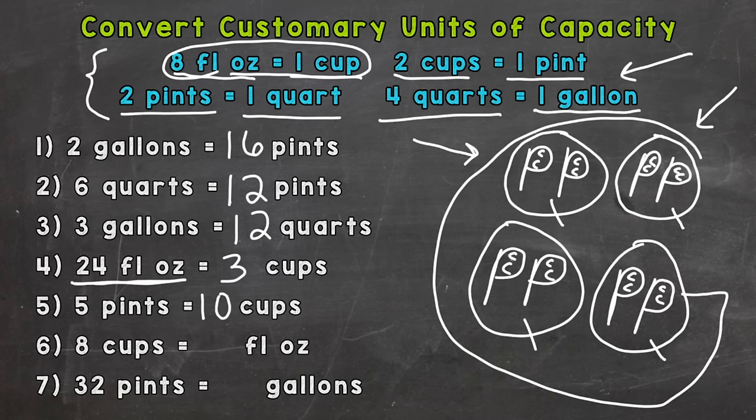Number six: eight cups equals how many fluid ounces. There are eight fluid ounces in one cup, so we have eight groups of that eight fluid ounces. Eight times eight is going to give us 64 fluid ounces. Again, one cup has eight fluid ounces, and we have eight of them, so eight times eight equals 64.